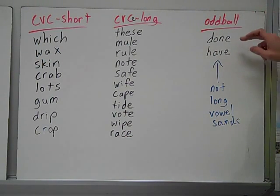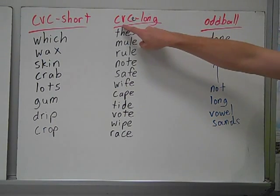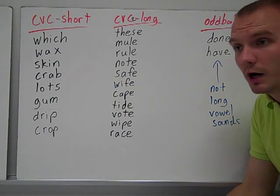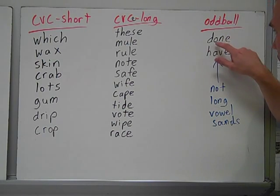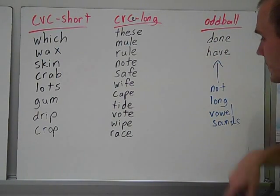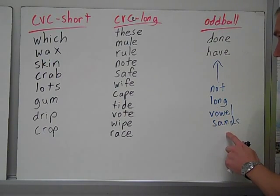Here are oddballs. Done and have. Spelled C, V, C, E. But, done. That is not a long O. And have is actually a short A. So, these are not long vowel sounds.